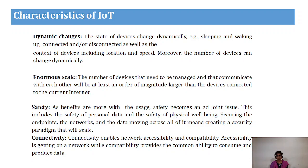Enormous scale: the number of devices that need to be managed and communicated with each other is at least an order of magnitude larger than devices connected to the Internet. Safety has become an important issue; it includes personal data and physical wellbeing. Security covers the endpoints, the networks, and the data moving across all of it, creating security parity. Connectivity enables compatibility and network accessibility — accessibility means getting on a network, while compatibility means providing the common ability to consume and produce data.